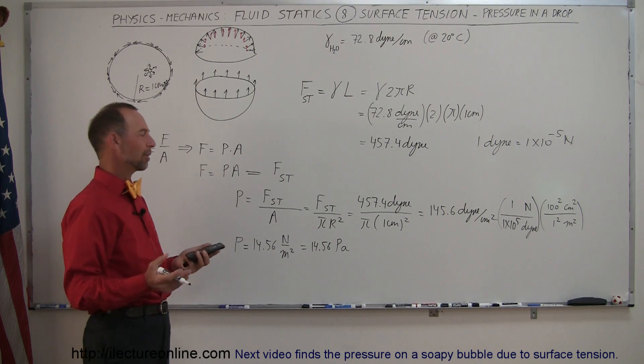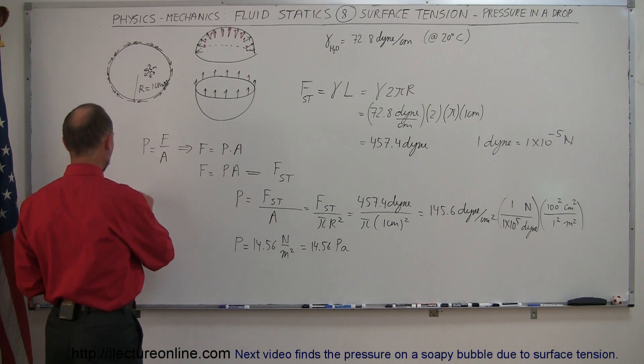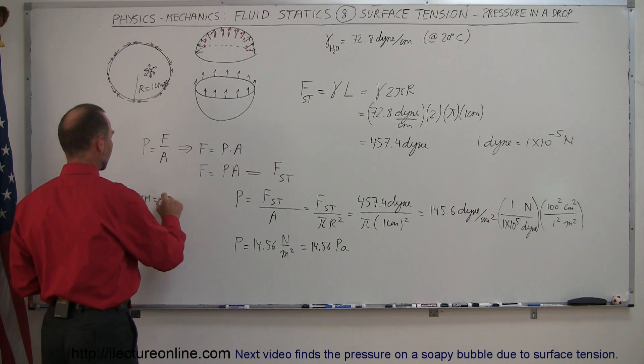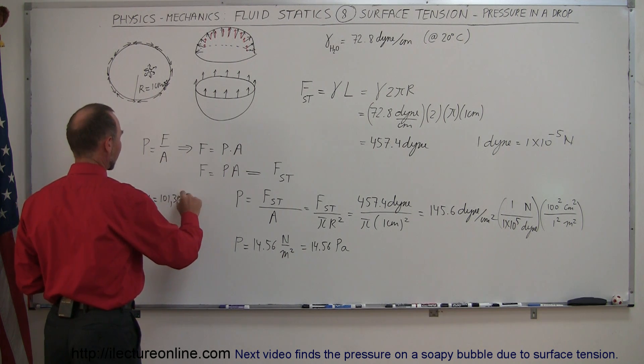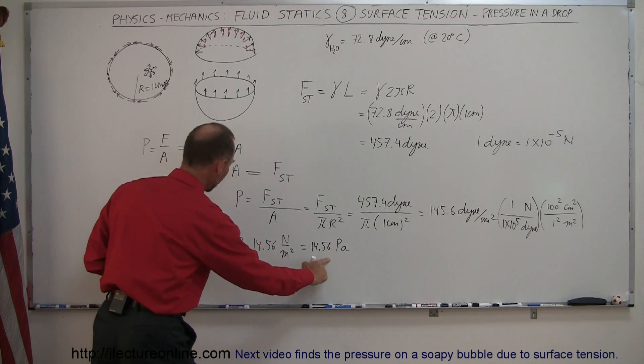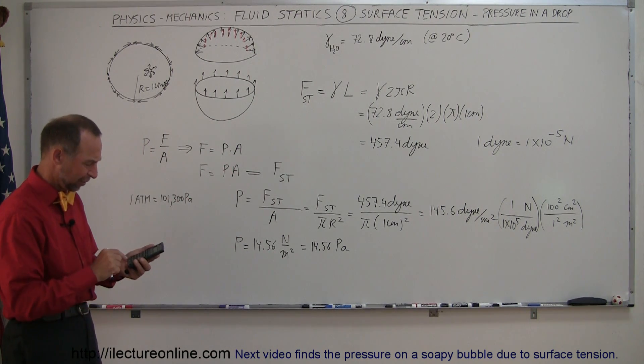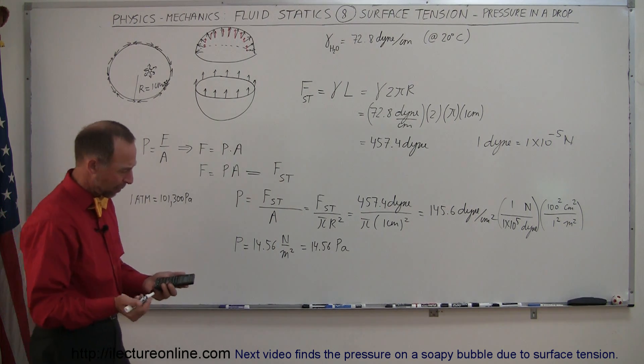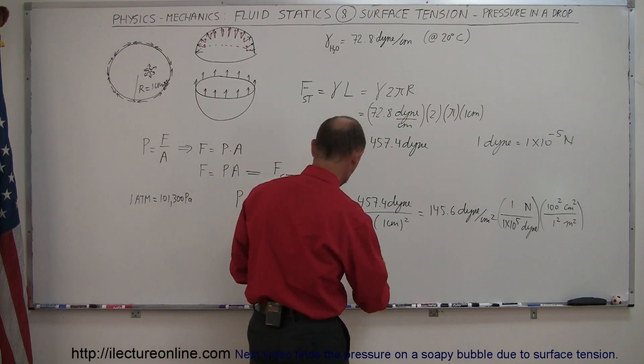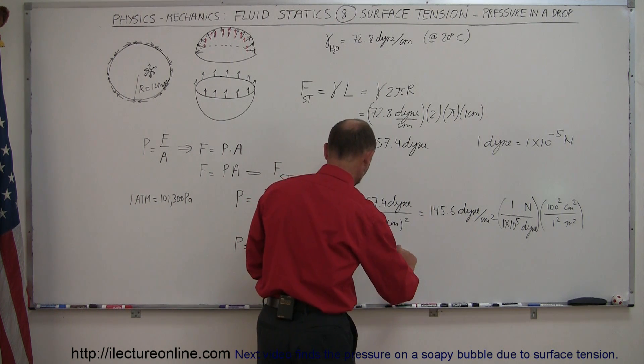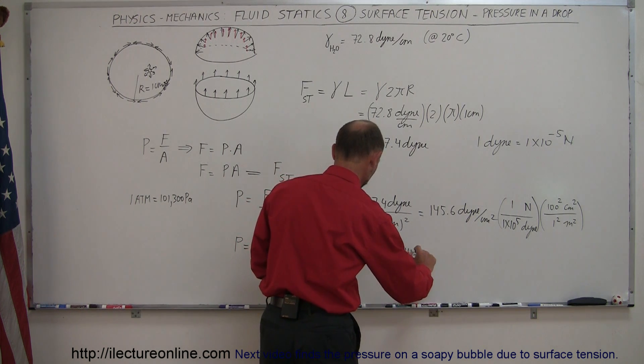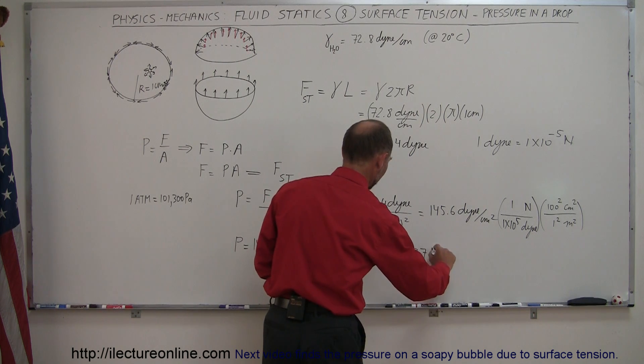And then compared to atmospheres, since one atmosphere is equal to 101,300 pascals, if I then divide this by 101,300 pascals, I then express that in terms of atmospheres. So divide by 101,300, and we come up with a pretty small number. So this is equal to 0.001437 atmospheres.